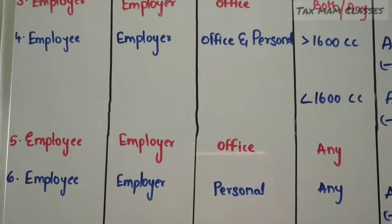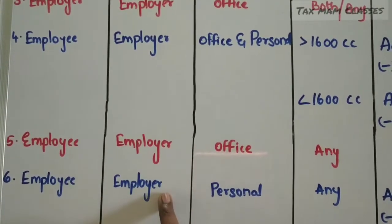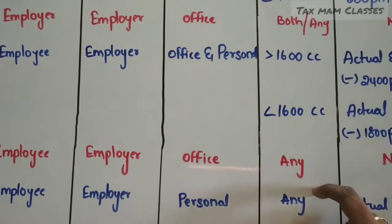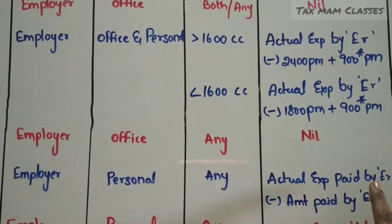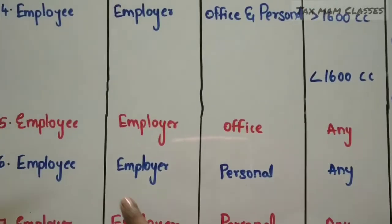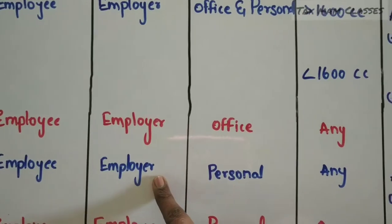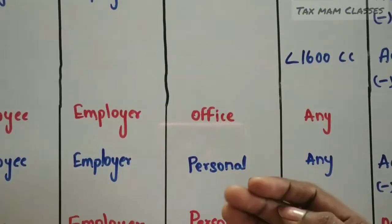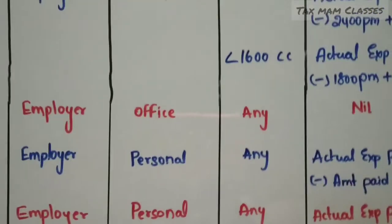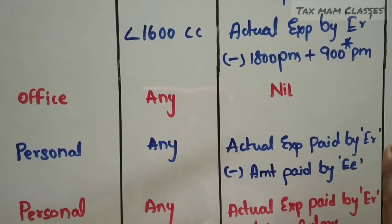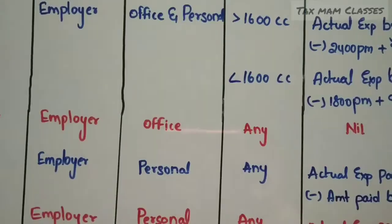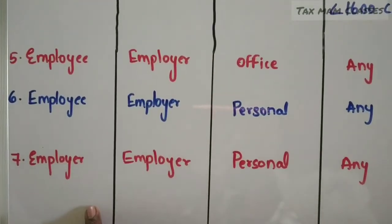In the sixth situation, the car is owned by the employee and expenses are reimbursed by the employer, but this car is fully used for personal purpose. It may be any car. The taxable value is: actual expenses paid by the employer minus the amount paid by the employee. Since the car is used fully for personal purpose and expenses are met by the employer, it is taxable to that extent.